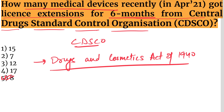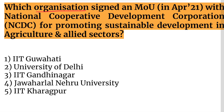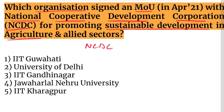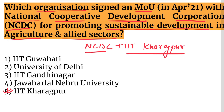Next question: Which organisation signed an MOU with the National Cooperative Development Corporation (NCDC) for promoting sustainable development in agriculture and allied sectors? The answer is IIT Kharagpur. NCDC and IIT Kharagpur signed an MOU on sustainable development in the agriculture sector.